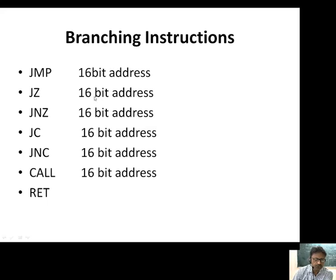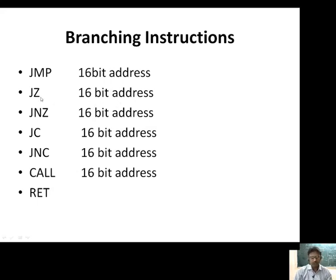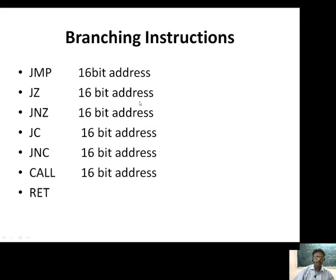The second instruction is a conditional branching instruction — Jump on Zero (JZ), followed by a 16-bit address. This instruction will jump only after checking a certain condition. Z means the Zero flag, so it will jump to the 16-bit address defined within the instruction only when the Zero flag is set. If the Zero flag is not set, it will not jump and will execute the next instruction instead.